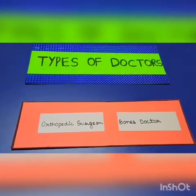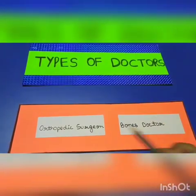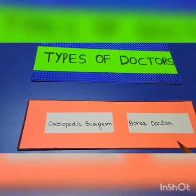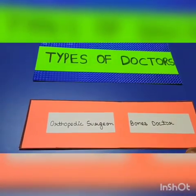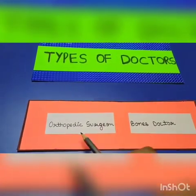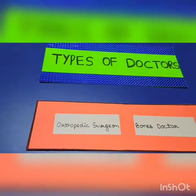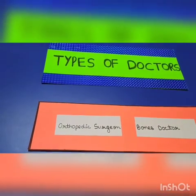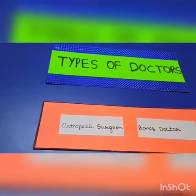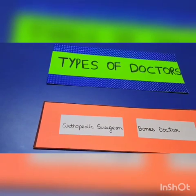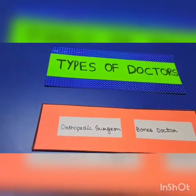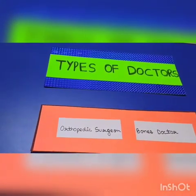The next one is an orthopedic surgeon. The first person you need to go see if you meet with an accident is an orthopedic surgeon, because an orthopedic surgeon deals with the skeletal system. Any broken legs, broken bones, knee-related issues, or anything wrong with your skeletal system — an orthopedic surgeon is going to fix it for you.